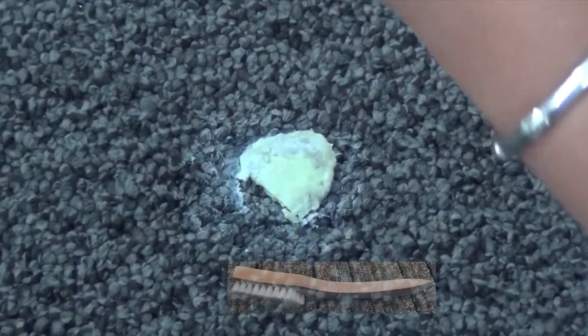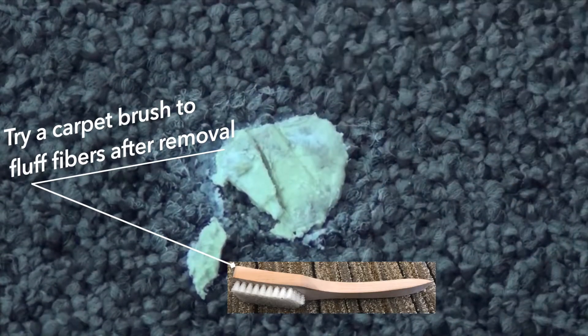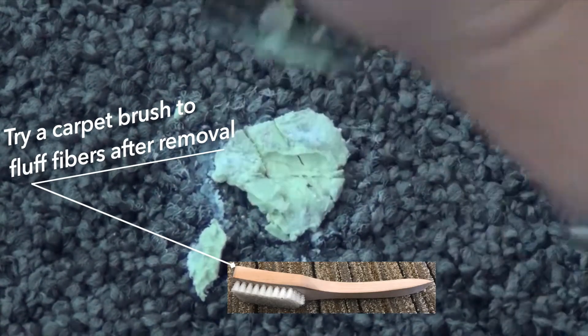Then you can use your carpet cleaning brush, specifically the back end of the brush here, to peel that gum up and pull it right off the carpet pile.